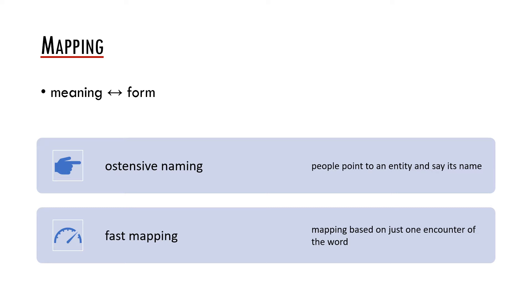Another possibility which has received quite a lot of attention is fast mapping. This term refers to an ability to associate a meaning with a form based on just one or very few encounters.